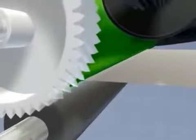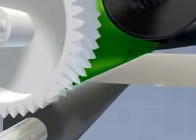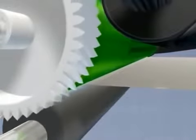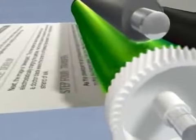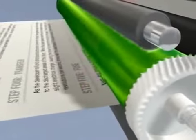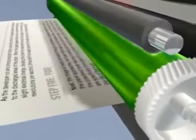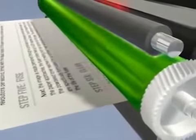When the paper passes under the drum, the transfer roller applies a slight electrical charge, causing the toner to move from the drum to the paper. The drum rotates up to two revolutions per second, timed with the exact speed of the paper, ensuring a complete image transfer.